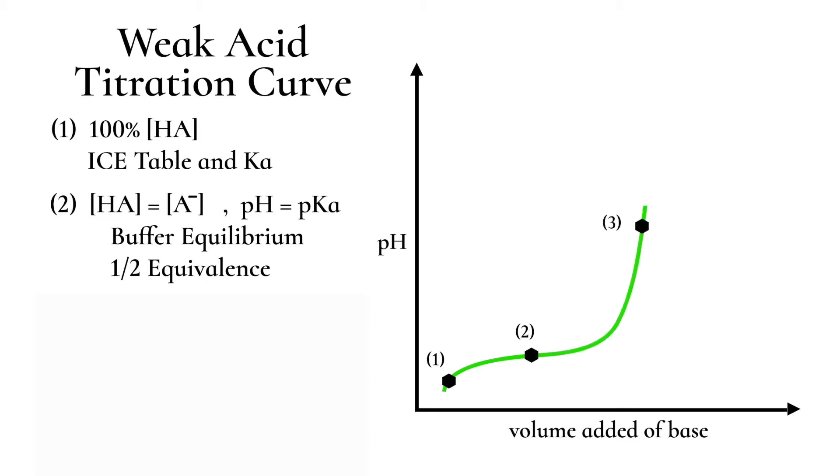Next, we get to the actual equivalence point. This is when we've converted all of the weak acid into its conjugate base. And then we finish when we have only our strong base left.